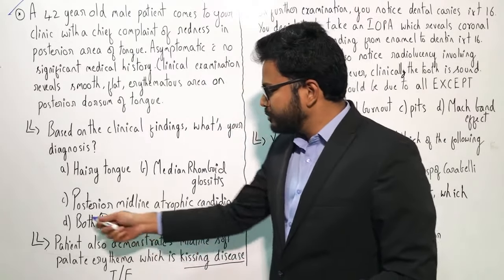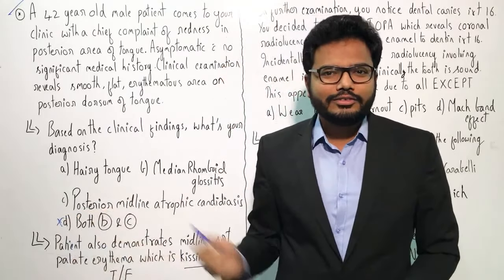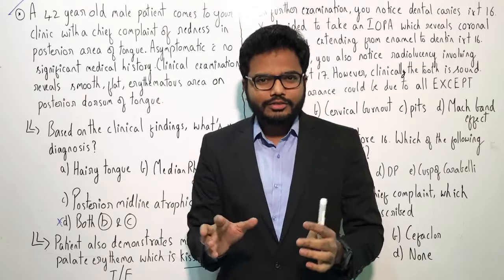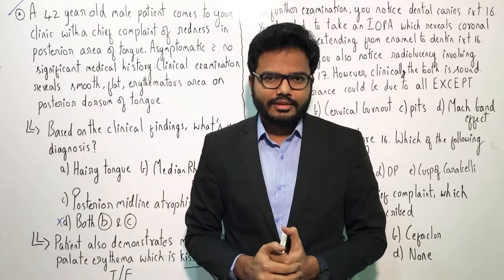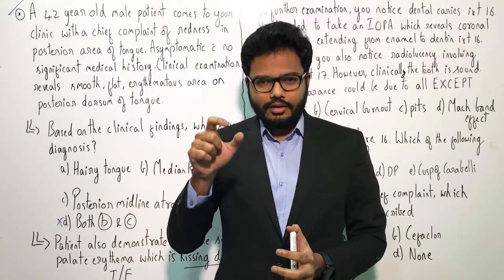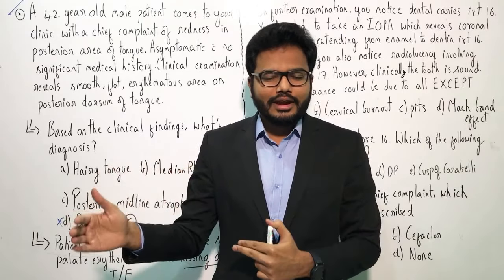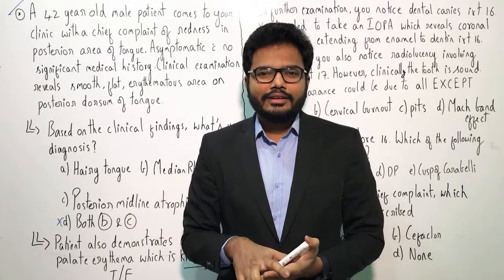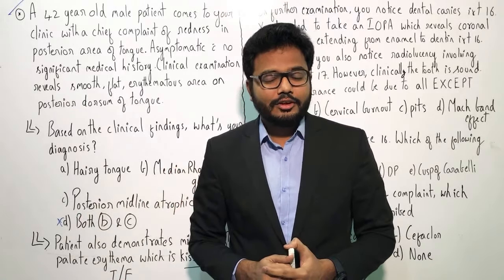Let me give you a hint: option B is not the right answer, option D is not the right answer. So exclude option D. As most of you mentioned, it seems to be median rhomboid glossitis. This is a rhomboid shape, smooth texture — sometimes it can be lobulated as well — and it appears erythematous. The papillae are absent, even taste buds are absent. It's present in the posterior midline of tongue, on the dorsum, not on the ventral side, and anterior to circumvallate papillae.